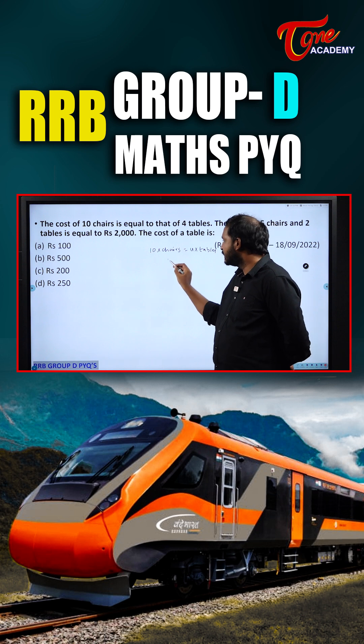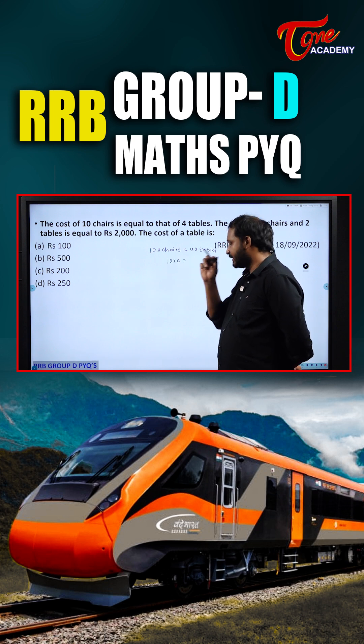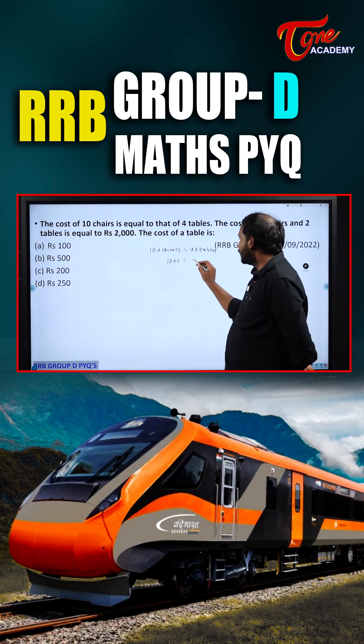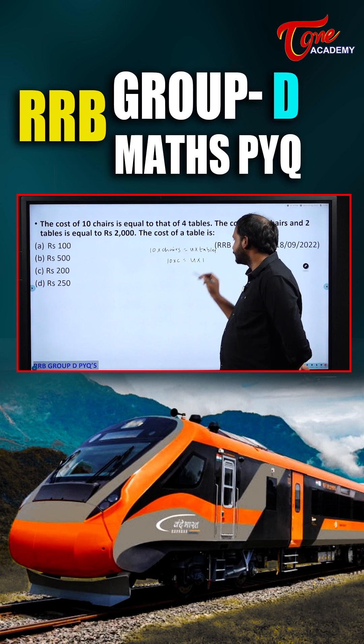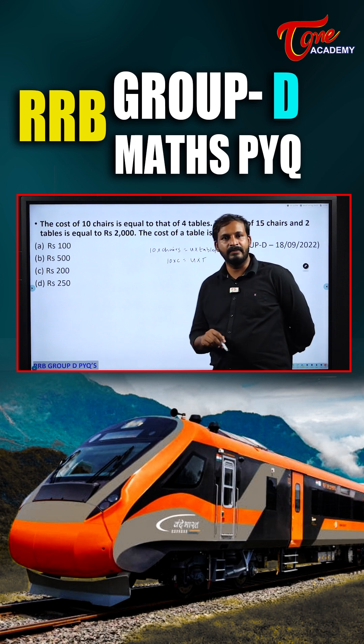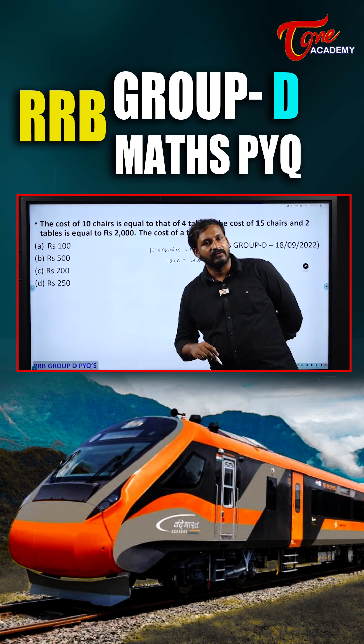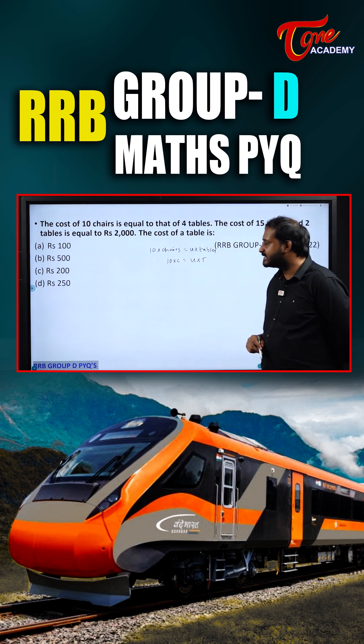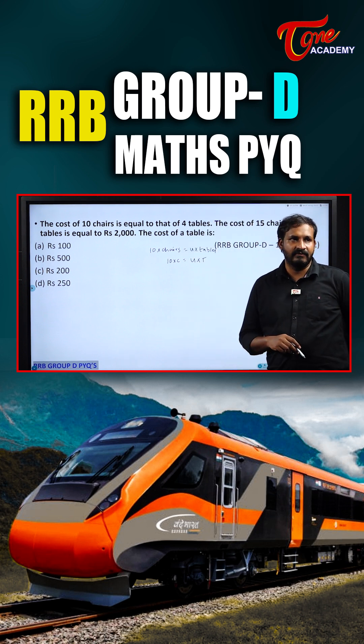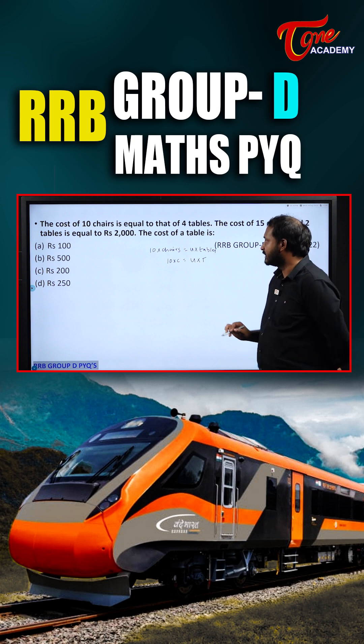That means 10C equals 4T. The price of 1 table is T, and the price of 1 chair is C.